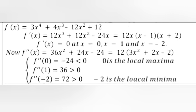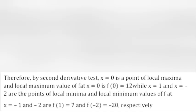f''(x) = 36x² + 24x - 24 = 12(3x² + 2x - 2). f''(0) = -24 < 0, so x = 0 is a local maxima. f''(1) = 36 > 0. f''(-2) = 72 > 0, so -2 is a local minima. Therefore by the second derivative test, x = 0 is a point of local maxima.